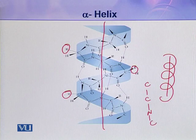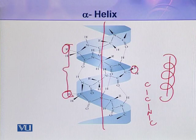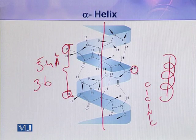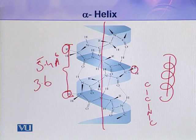The main backbone contains the polypeptide chain, and the R groups, which are bulky groups, lie outside. One complete turn is the repeating unit of this alpha helix. It is about 5.4 angstroms long and contains about 3.6 amino acids in a single turn.